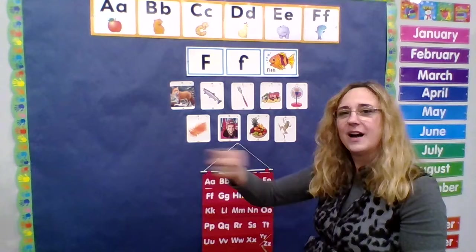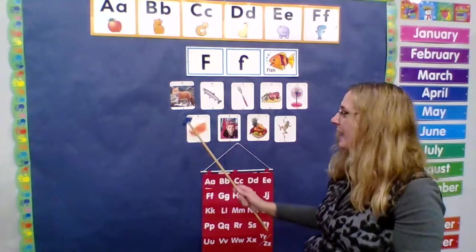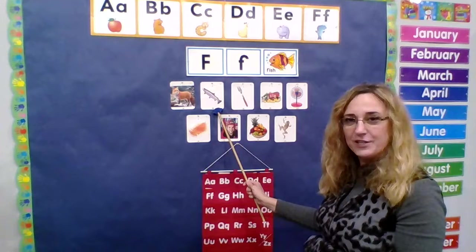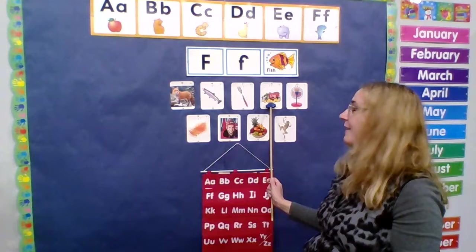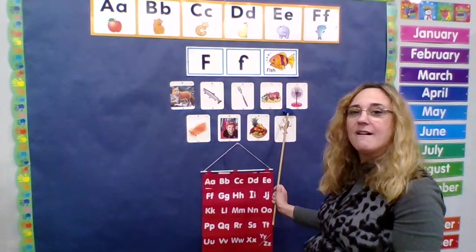Let's practice some words that start with letter F. F is for fox. F is for fish. F is for fork. F is for farm. F is for fan. F is for feather.